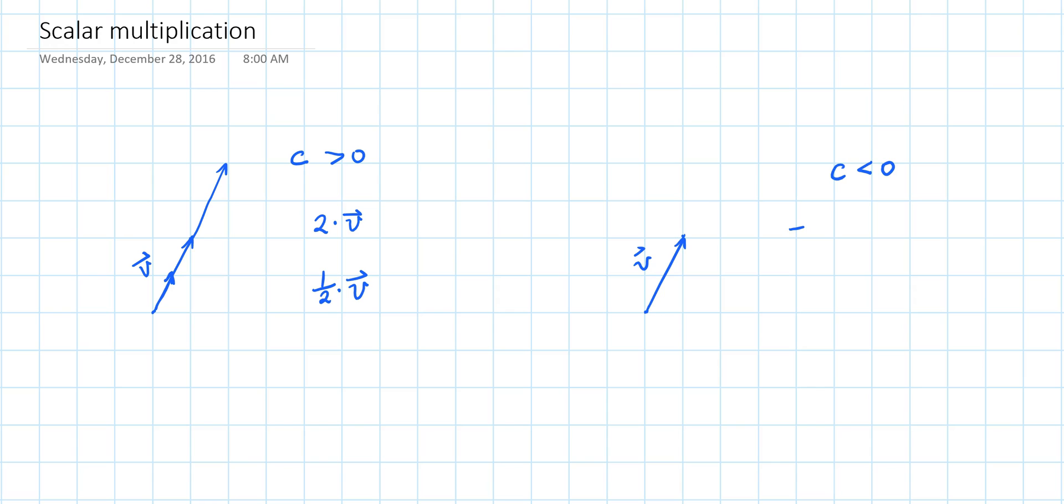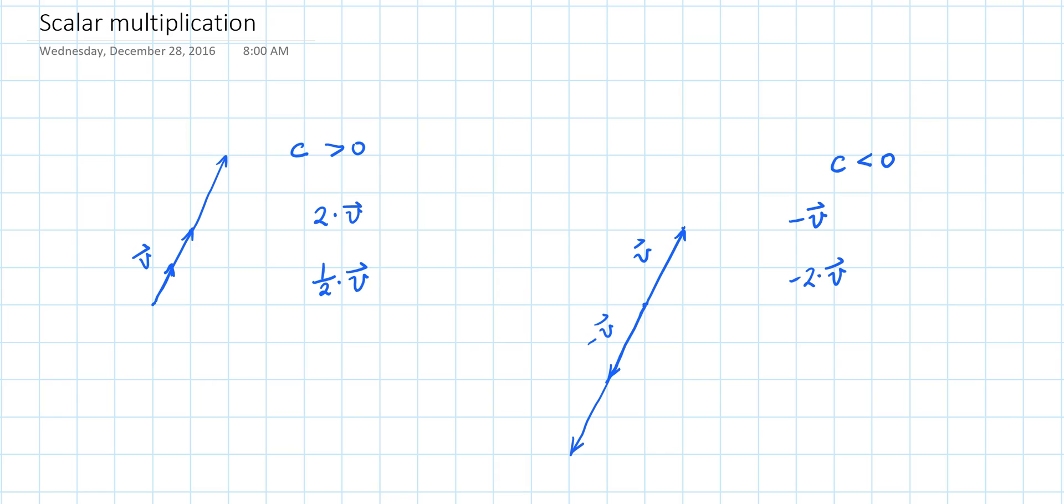We have already learned that negative 1 times V, which is the negative of V, is the vector that has the same length as V but the opposite direction. So this is negative V. And negative 2 times V would be the vector that's twice as long as vector V but in the opposite direction. So this vector is negative 2V.